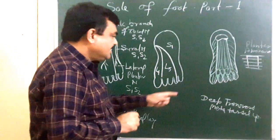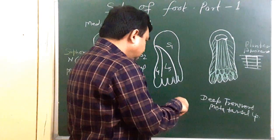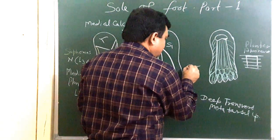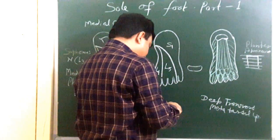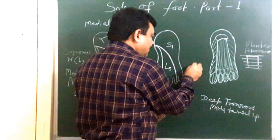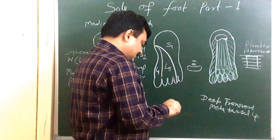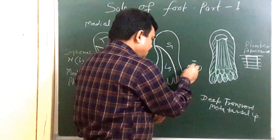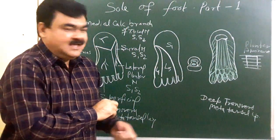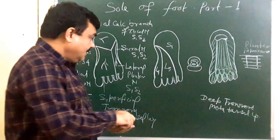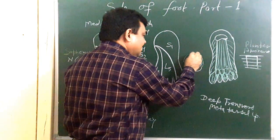If you have got a section at this level, suppose you got a section at this level you will find here is the phalanx and here is long flexor tendon that is flexor digitorum longus and here is flexor digitorum brevis. And here is synovial sheath, this is synovial sheath around these two tendons and here is fibrous flexor sheath which covers these structures.